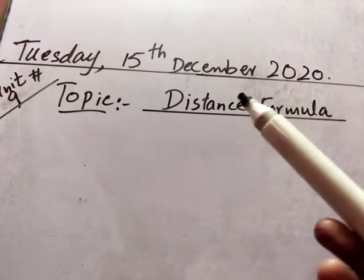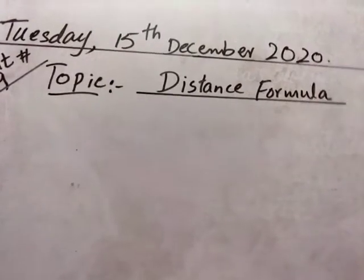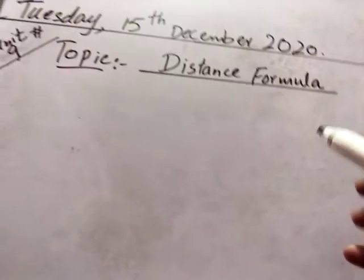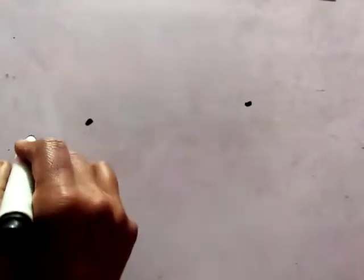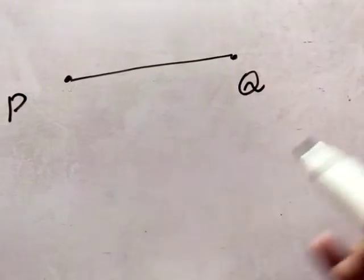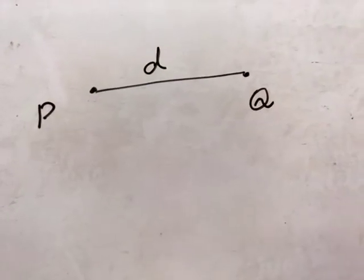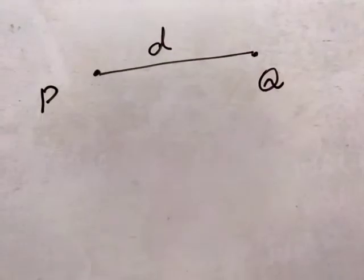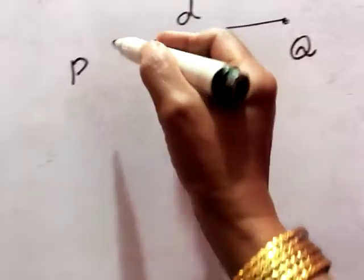Today is Tuesday 15th December 2020, unit number 9, topic is distance formula. The distance formula means the formula for finding the distance between two points. Suppose there are two points, P and Q, and the distance between these two points is denoted by D.